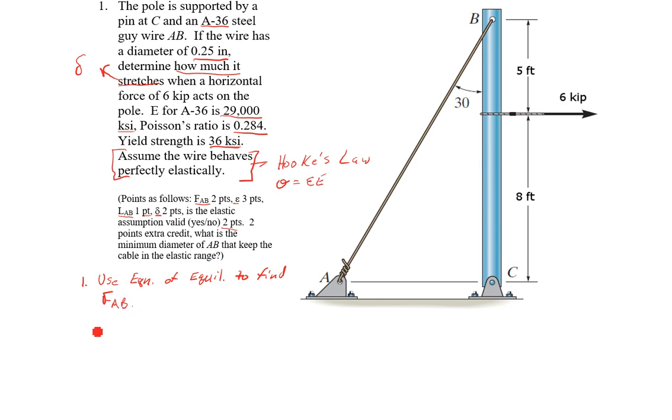Step two, use Hooke's law to find our strain. We have a force, we know the area of this because of its diameter, so we'll have stress equals epsilon E, which is Hooke's law, and stress also equals our force over our area.